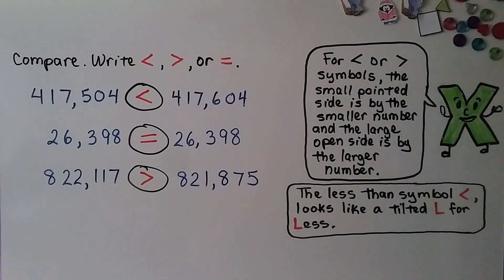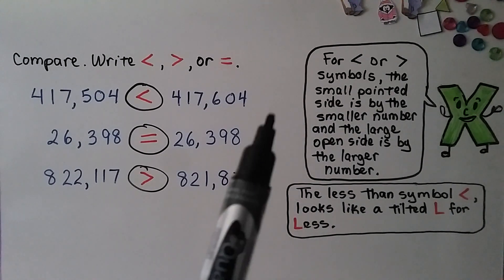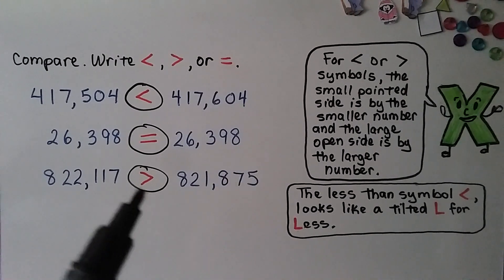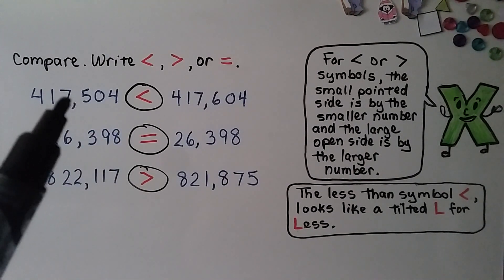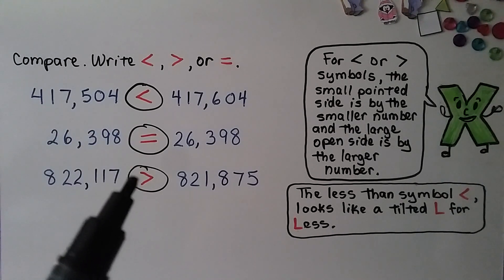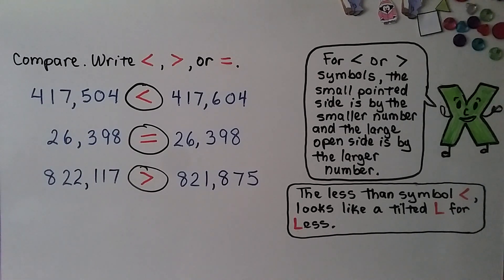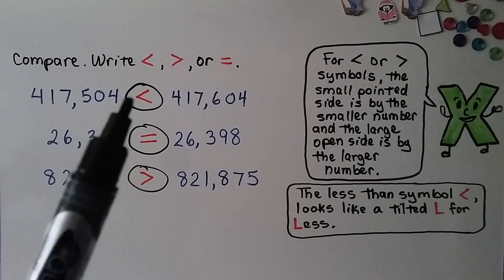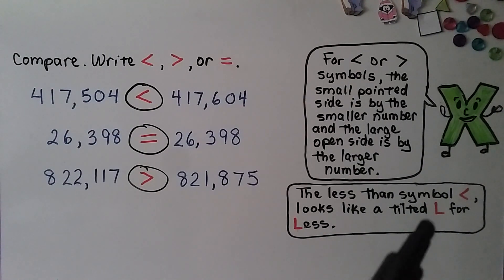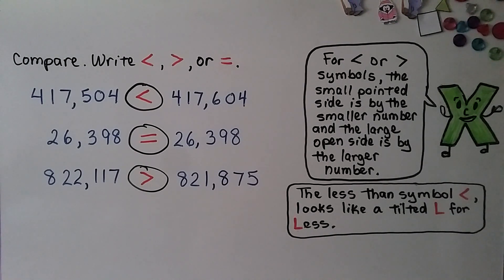For the less than or greater than symbols, the small pointed side is by the smaller number and the large open side is by the larger number. You can remember that the less than symbol looks like a tilted L for 'less,' so that's how you recall which symbol is which.